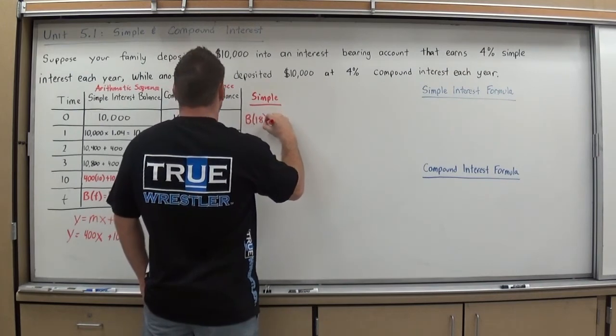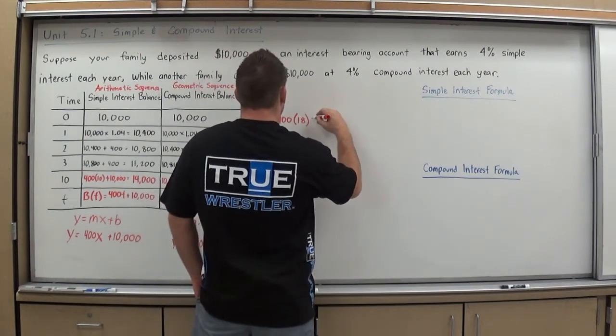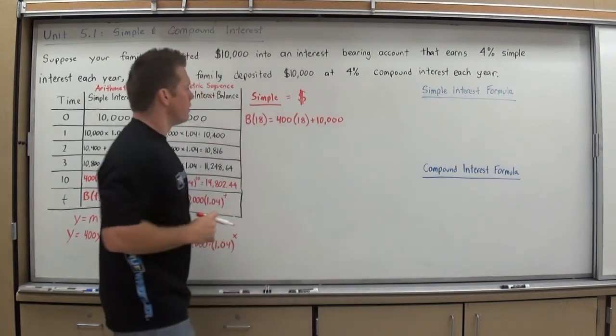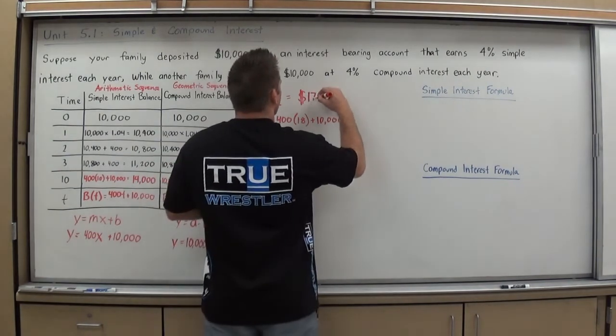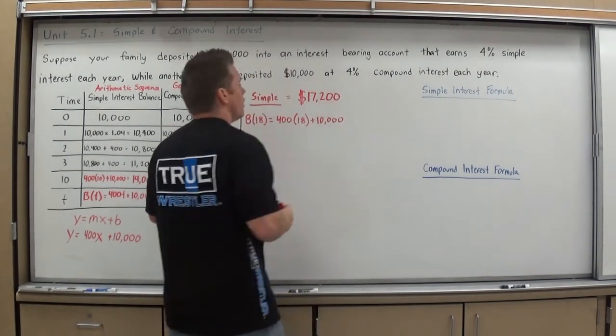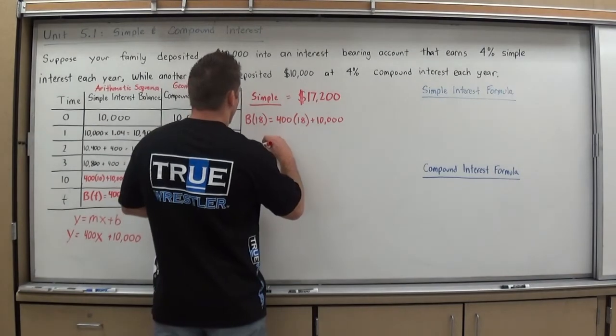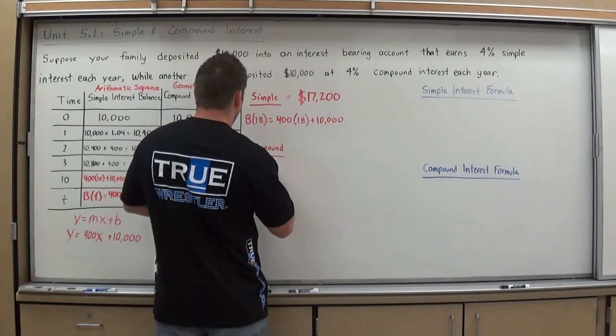So I'm now going to find the balance of the simple interest for B(T) at 18 years. So B(18), and I'm going to plug it right into that equation. $400 times 18 plus $10,000. So your simple interest account would have $17,200, which nowadays is maybe enough to go to a cheaper college for one year. Not really enough. Hopefully the compound will be a little bit better.